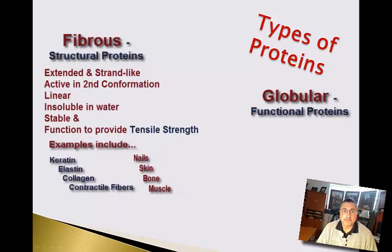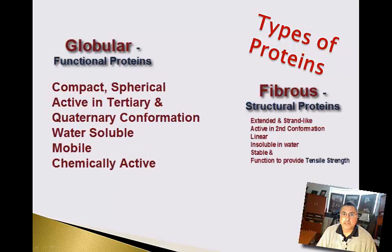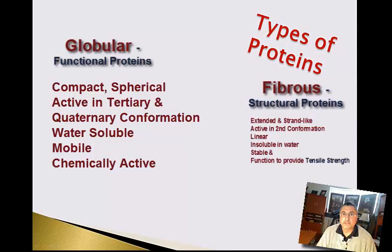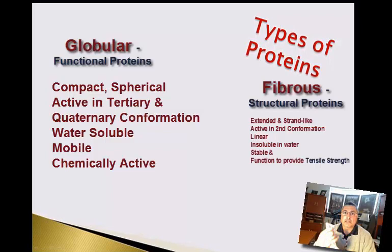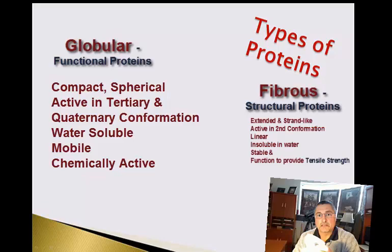On the flip side, we have globular proteins, also known as functional proteins. Globular proteins are compact, spherical proteins that are active in their tertiary and/or quaternary structures. That would look like a protein folded in secondary conformation and then further folded into a globular shape in its tertiary structure.